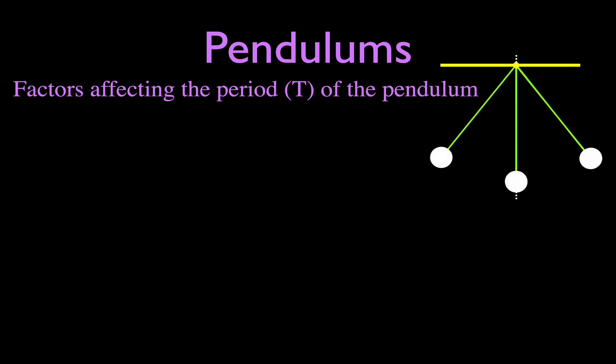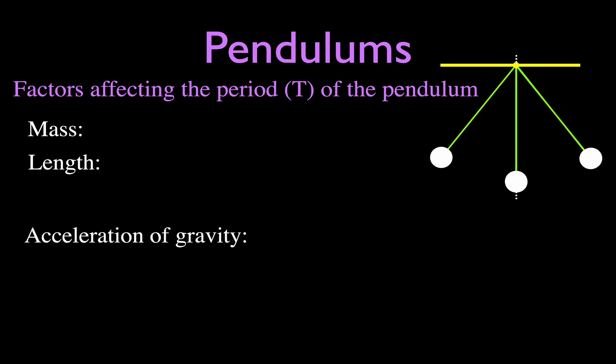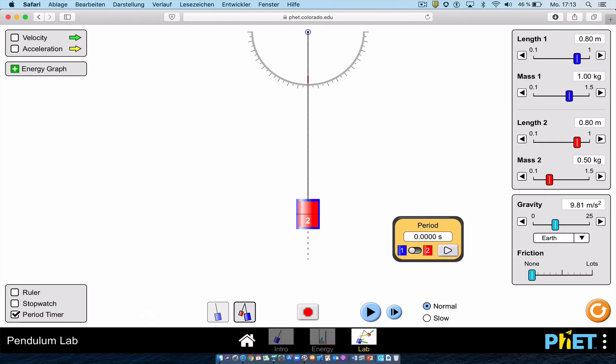Now here's a pendulum. We're going to look at the factors that affect the period of the pendulum. What are some of the variables? Well, we have the mass, the length, and the acceleration of gravity, depending on where the pendulum is. On Earth the acceleration due to gravity is 9.81; on the moon it's only 1.62 — one-sixth of Earth. And then there is the displacement, which is how far we pull back the pendulum. We're going to look at each of these factors using this excellent PHET simulation.